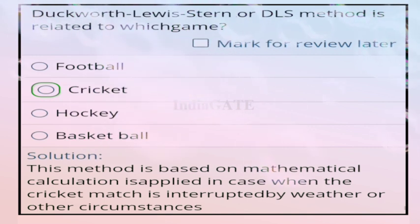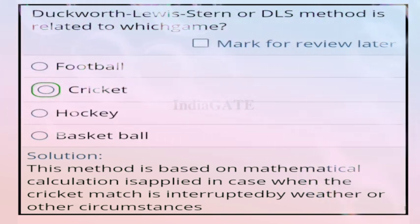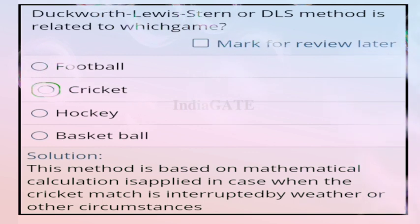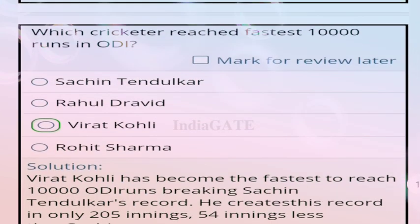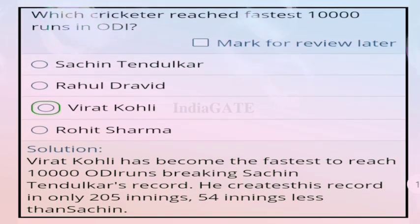Question 84: the Duckworth-Lewis-Stern (DLS) method is related to which game? Correct answer is option B, cricket. This method is based on mathematical calculations applied when a cricket match is interrupted by weather or other circumstances.